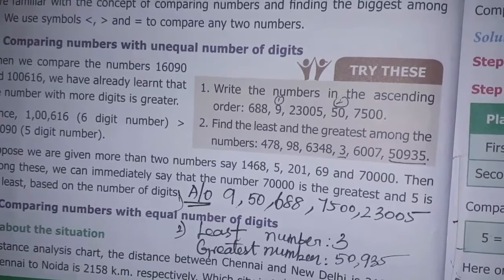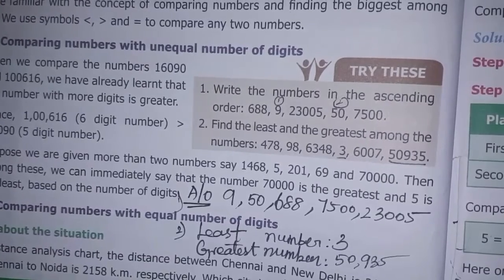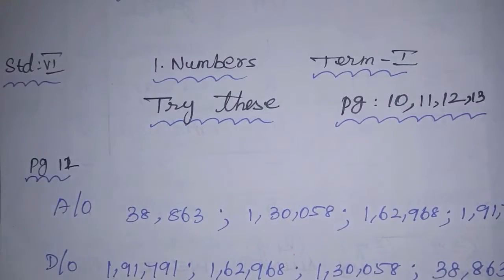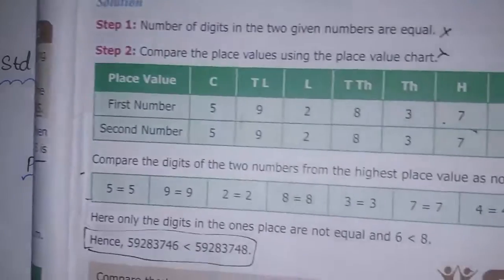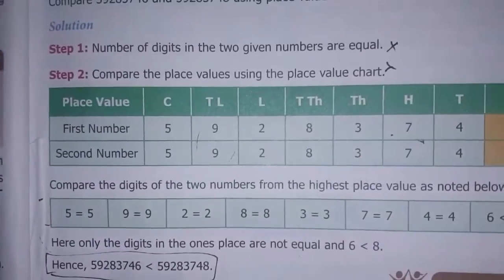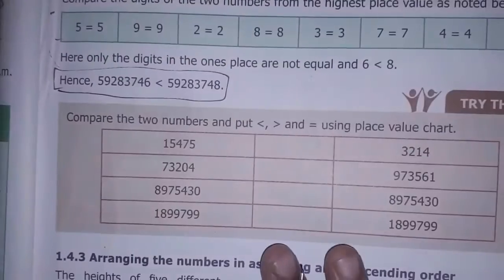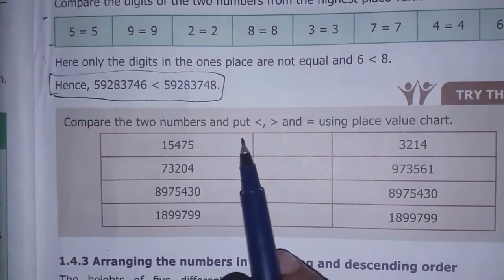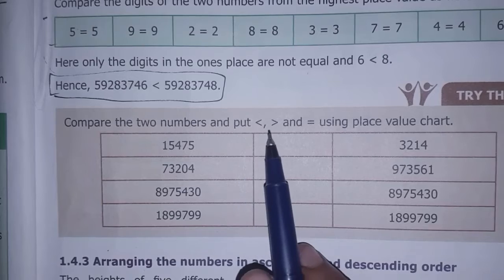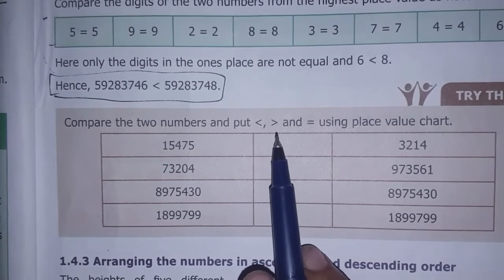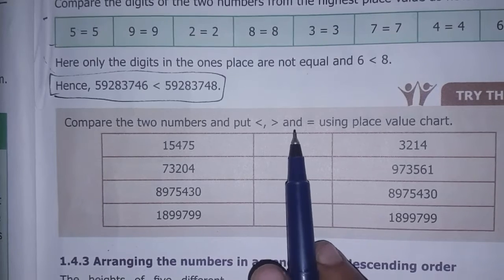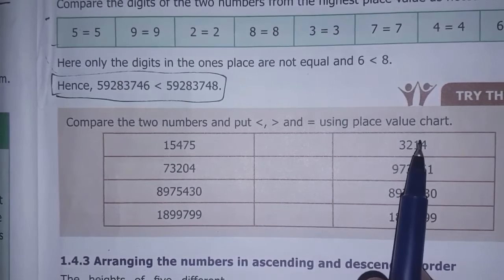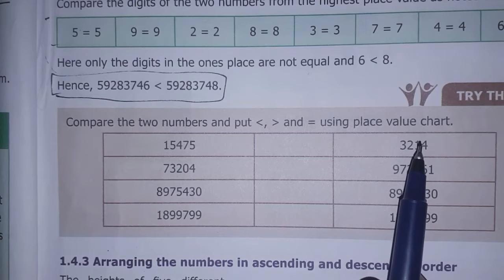Next is page number 11 — try these. Compare the two numbers by putting less than, greater than, and equal to using a place value chart.